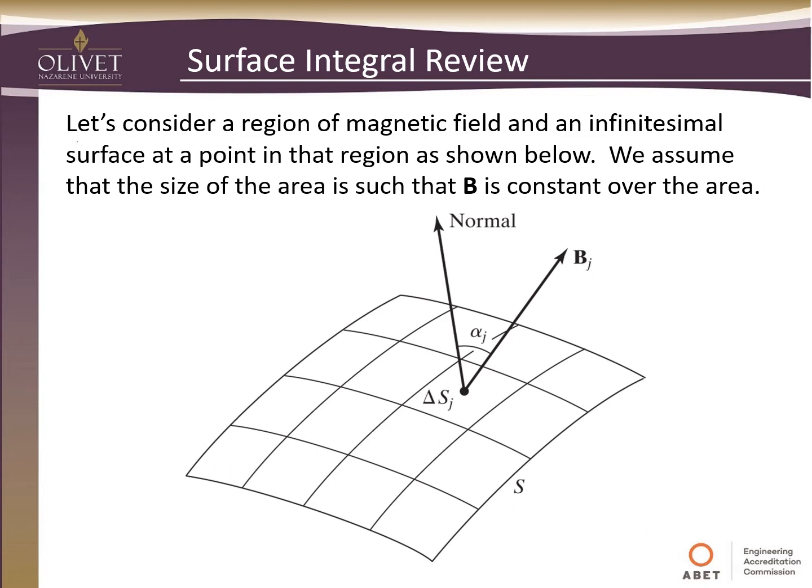Let's set up this idea of a surface integral. We want to consider we have a region that has a magnetic field present, and so we want to look at an infinitesimal small surface at a point in that region as shown below. And so we want to pick this point to the point where we can assume that the size of the area is such that the magnetic field is constant over that area.